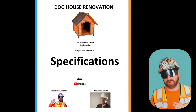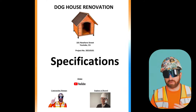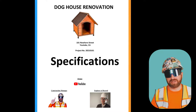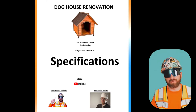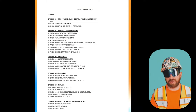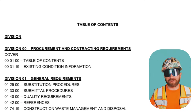Let's take a look at this spec book. The first page, as you can see, is a cover page. The cover page will usually tell you the project name, date, address, and the key players involved. Following the cover page, you should typically find the table of contents, which is your navigational aid throughout this document.